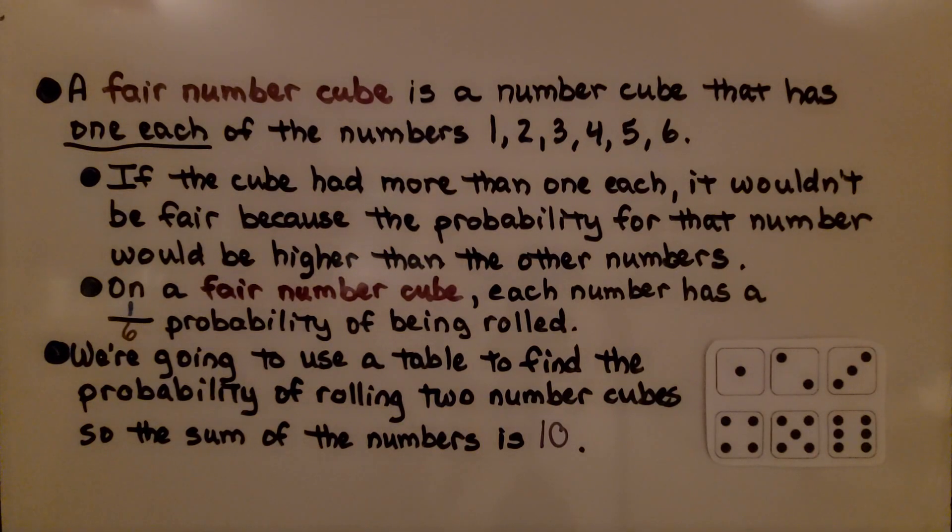A fair number cube is a number cube that has one each of the numbers 1, 2, 3, 4, 5, 6. If the cube had more than one each, it wouldn't be fair because the probability for that number would be higher than the other numbers.